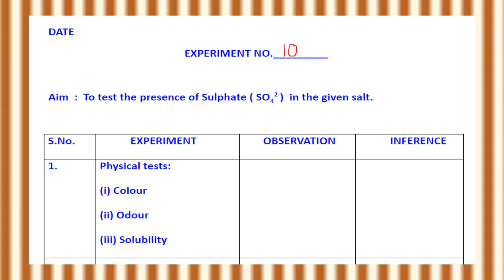The aim is to test the presence of sulfate in the given salt. First you will write the physical test like this: color — what is the color of the salt in the observation — odor, if there is a particular smell or specific characteristic smell, and solubility. When we do the cations in detail, we will understand how to write the inference for color, characteristic smell, and solubility criteria. For the time being you can leave these two columns as they are.